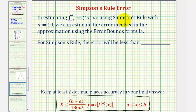When using Simpson's rule, the error will be less than or equal to the quantity b minus a to the fifth power, where a and b are the limits of integration, divided by 180 n to the fourth, times the absolute value of the maximum of the fourth derivative function on the closed interval from a to b.